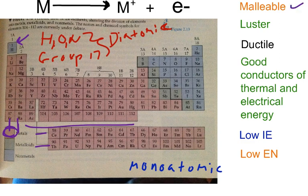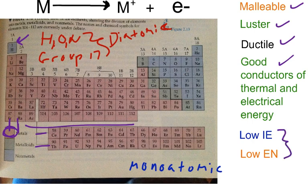Metals tend to be malleable, have luster, are ductile, are good conductors of thermal and electrical energy, and have low ionization and electronegativities. I did ionization energy and electronegativity in another video in Periodic Trends, so you can check that out if you need to brush up on that.